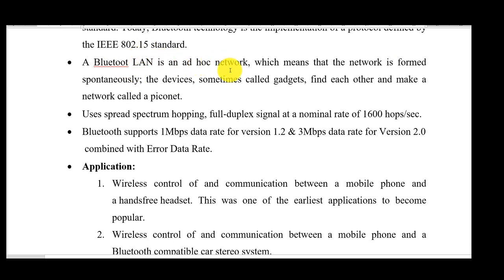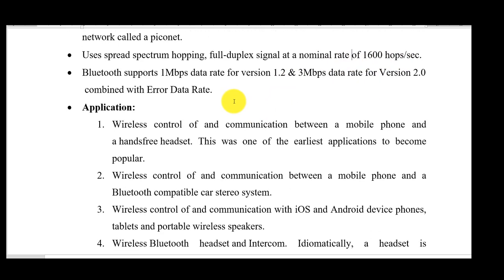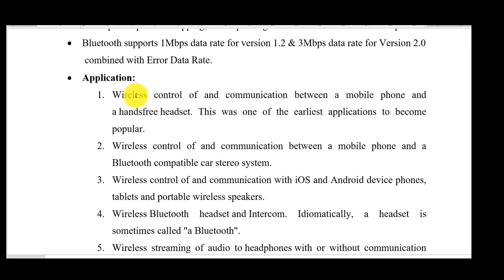Bluetooth is an ad-hoc network, meaning there is no centralized access point required. Any two devices can create a network and establish a Bluetooth connection at any time. It uses half-duplex method with around 1600 hops per second using FHSS — Frequency Hopping Spread Spectrum. Bluetooth 1.2 supports 1 Mbps and version 2 supports 2 Mbps, while Bluetooth 4 supports up to 10 Mbps.